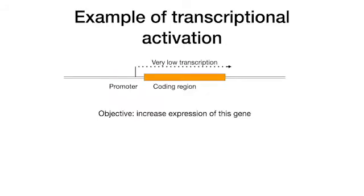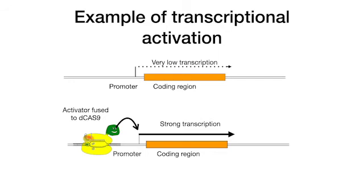As an example, we will review the outcome of fusing a transcriptional activator to D-Cas9. Assume that we have a gene expressed at a very low level and we want to increase transcription — perhaps to see the result, or because the gene has a valuable function in the organism. We obtain a D-Cas9 fused to a transcriptional activator; most DNA viruses, for example, encode strong transcriptional activators. We then load a guide RNA homologous to a region very close to the promoter of the gene. When the ribonucleoprotein complex of fused D-Cas9 binds to the target, the activator is positioned in an optimal way to stimulate transcription by interacting with RNA polymerase. As a result, the target gene is activated.